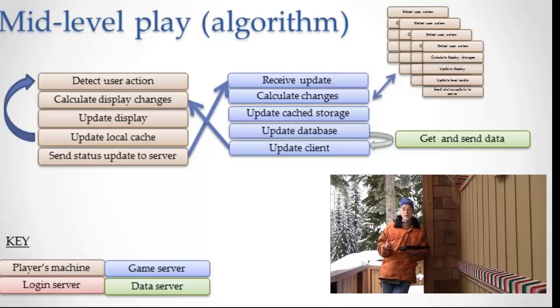So now here's the algorithm. Here's the way of thinking about this more mechanically. I gave you the story form. Let's talk about the form that's more mechanical. So the first thing that happens is your client detects some action that you did, something that you did, some keystroke, some something.